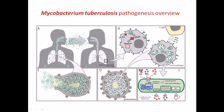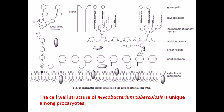Here comes the beginning of the structure of Mycobacterium tuberculosis. The cell wall structure of Mycobacterium tuberculosis is unique among the prokaryotes — you never find this structure in any other prokaryotic cell. In most prokaryotic cells, the cell wall is mostly made up with peptidoglycan.